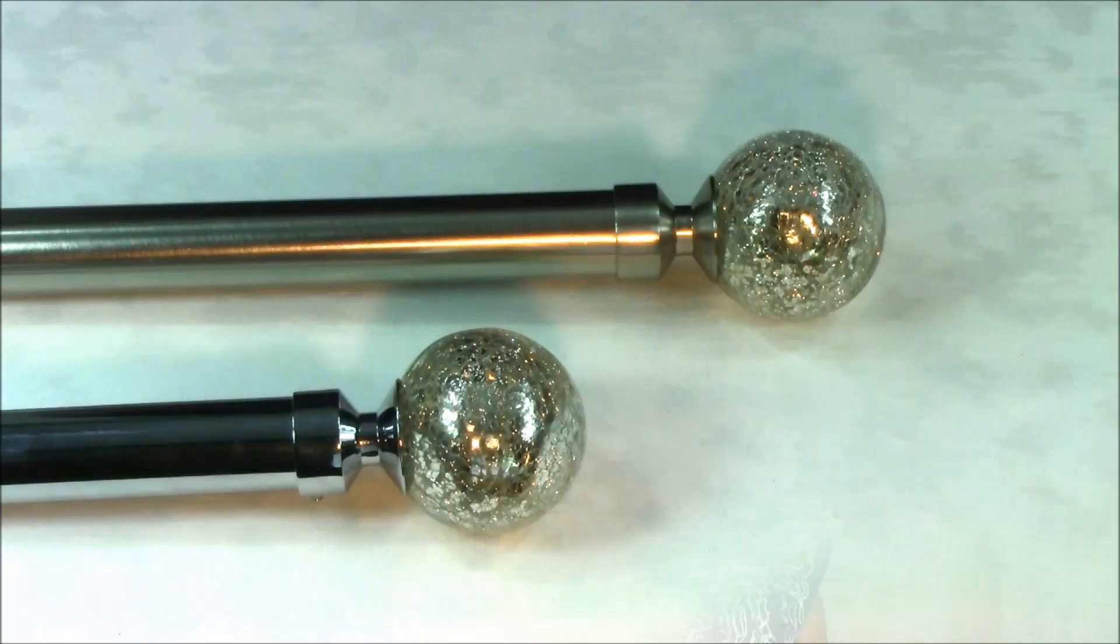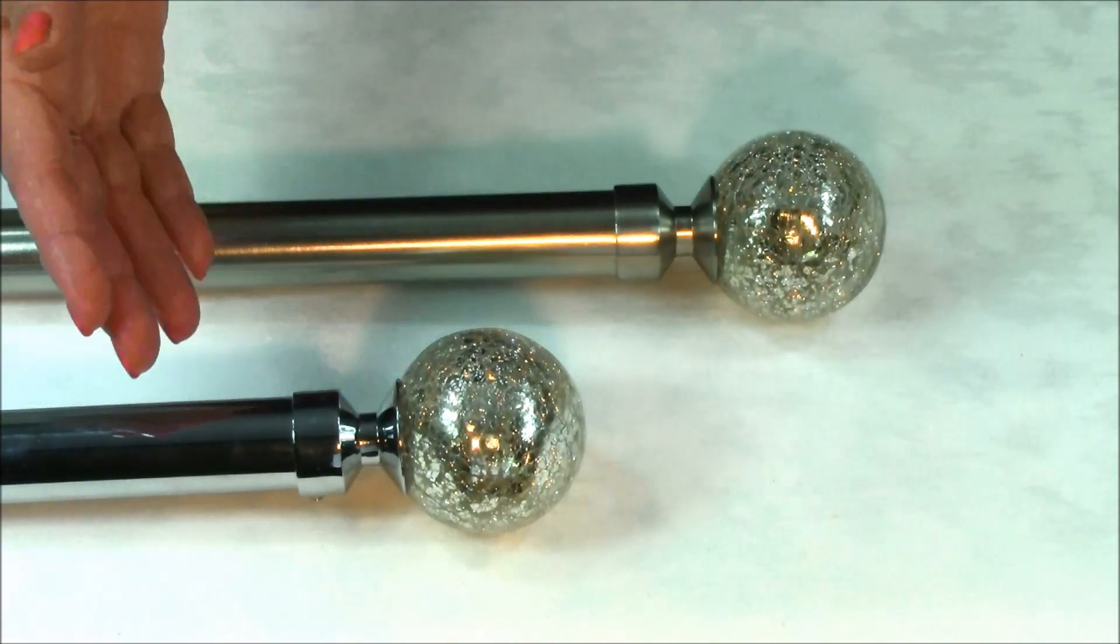Hi, I'm Angela from polesandblinds.com. These are samples of the Speedy Empire 28mm eyelet curtain pole. The pole is supplied as a complete set and is available in satin silver and chrome.